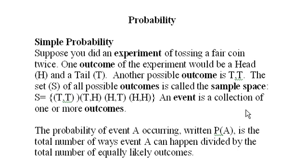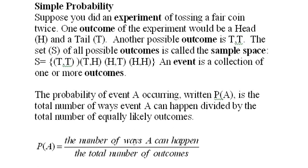An event is a collection of one or more outcomes. The probability of event A occurring, written P(A), is the total number of ways event A can happen divided by the total number of equally likely outcomes, or the cardinality of the sample space. So the number of ways A can happen over the total number of outcomes, and these have to be equally likely.